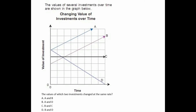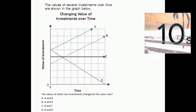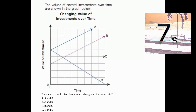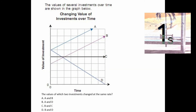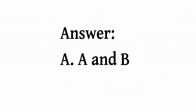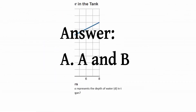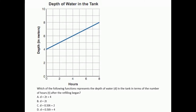The values of several investments over time are shown in the graph below: changing value of investment over time, with value of investment on the vertical axis and time on the horizontal axis. The values of which two investments change at the same rate? Is it A: A and B, B: E and D, C: D and C, or D: B and D? The answer is letter C, D and C.